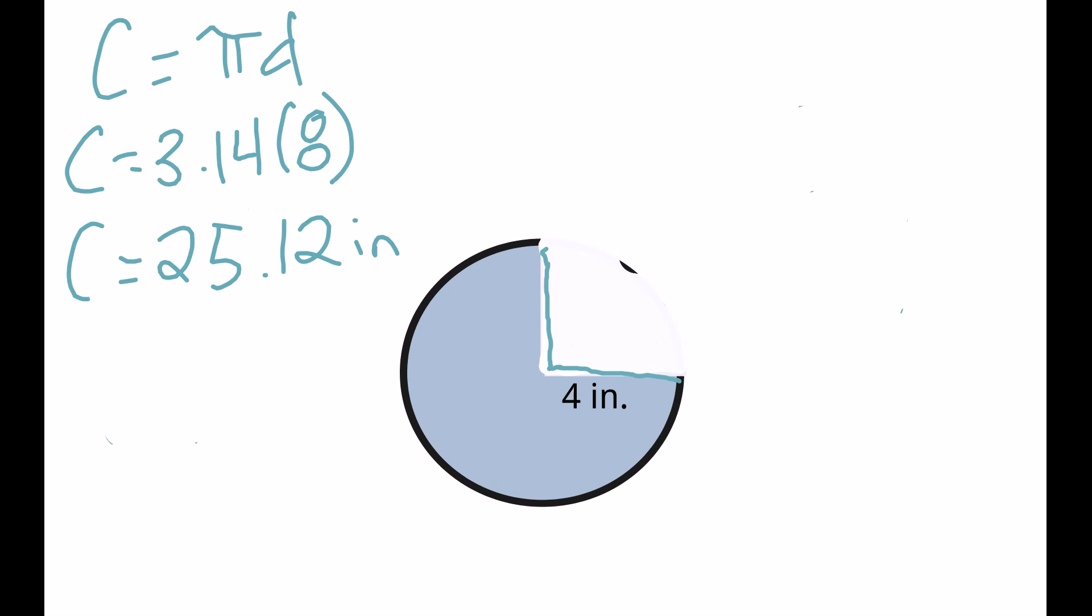But because we only have three-fourths of the circle, this outside black line only goes three-fourths of the way, we're going to do the same thing by finding three-fourths of that length. So I have three-fourths times 25.12, and put that over 1. We're going to go ahead and calculate that. I get 75.36 over 4, which then gives me 18.84.